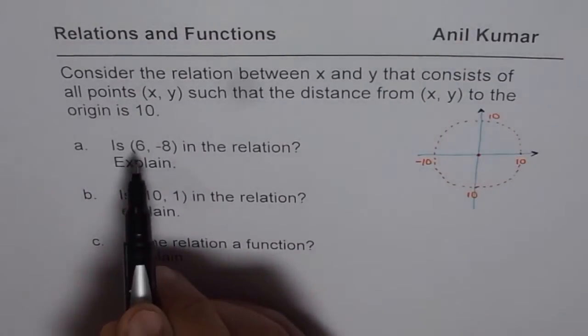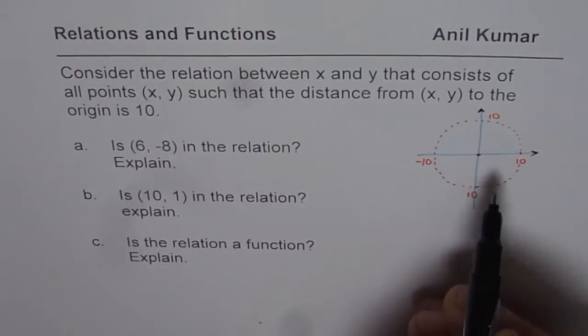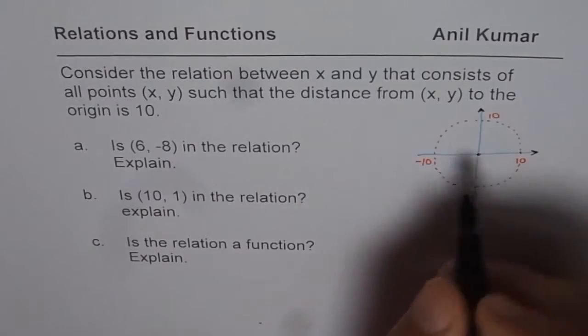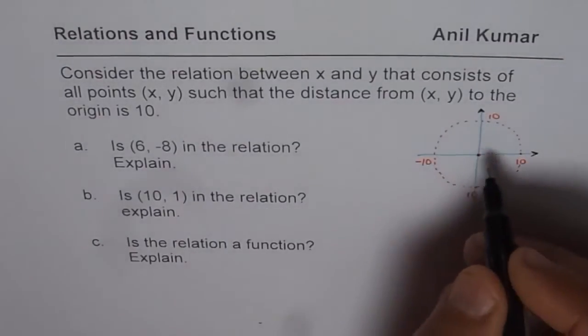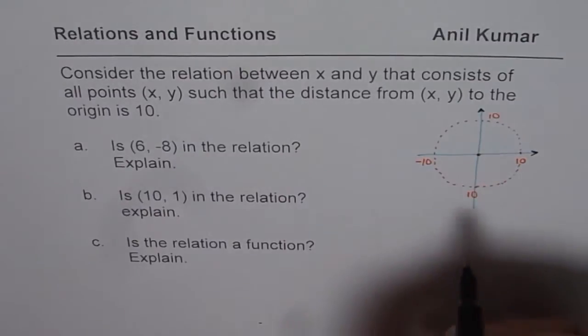Now, if coordinate point (6, -8) is on this circle, in that case, distance of this point from the center should be 10 units. So, that is what it means. How do you find this distance? (6, -8) means somewhere here we are considering the point (6, -8).